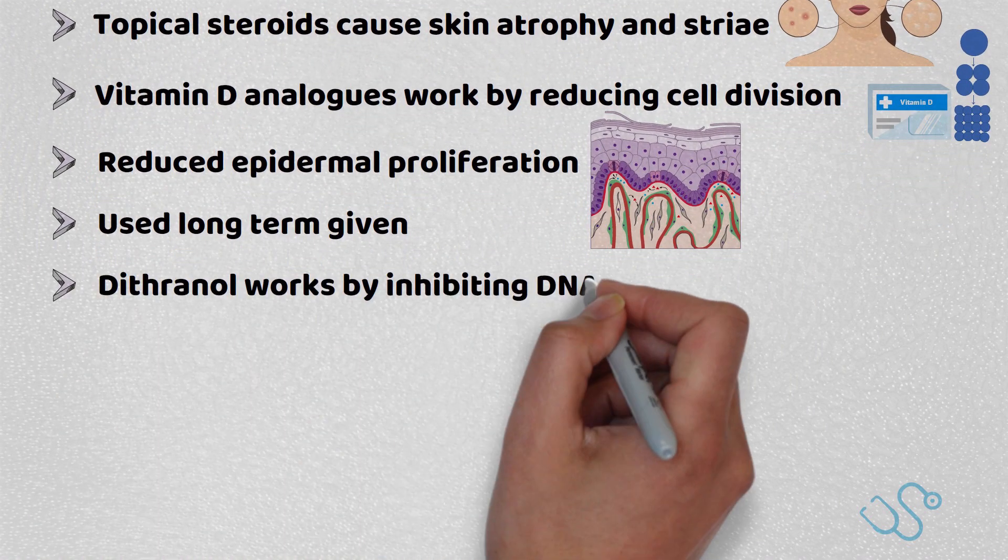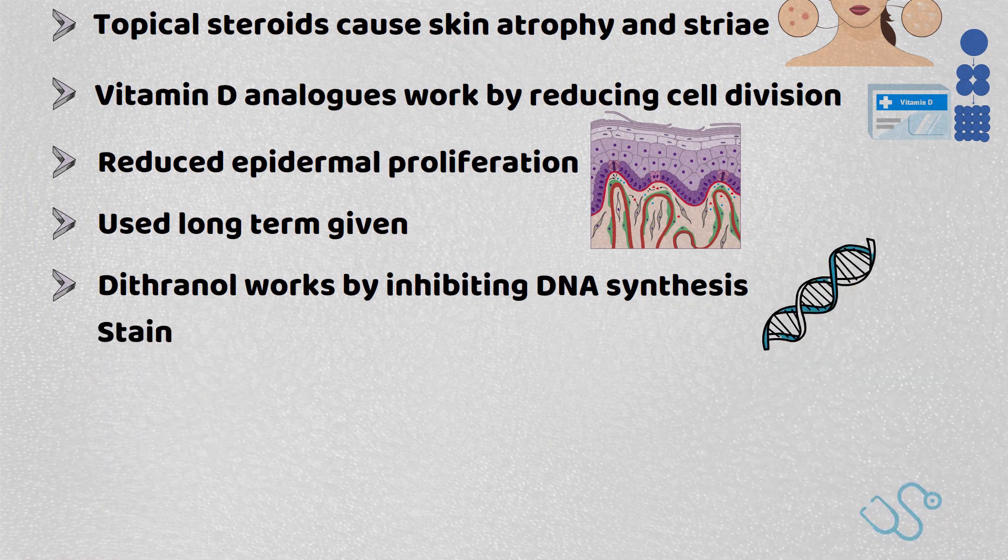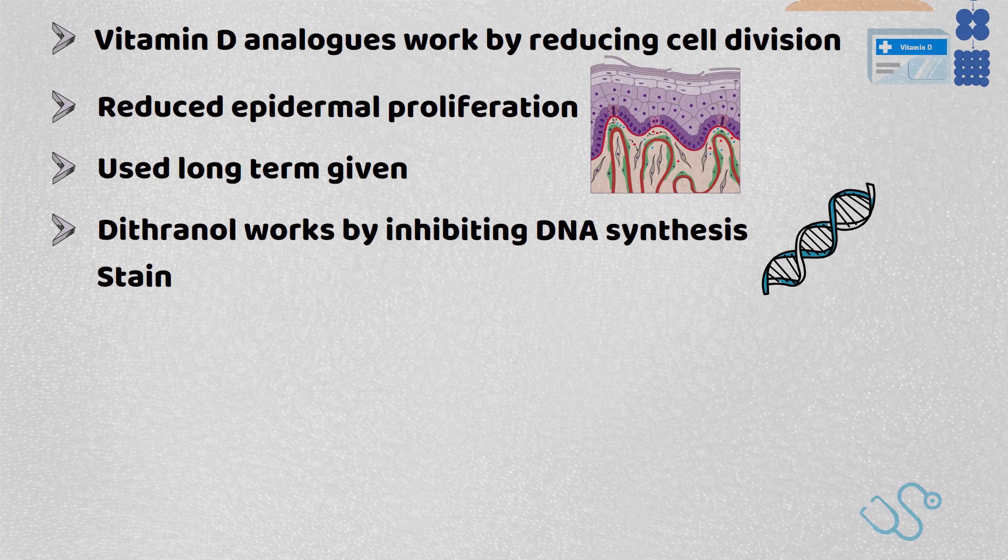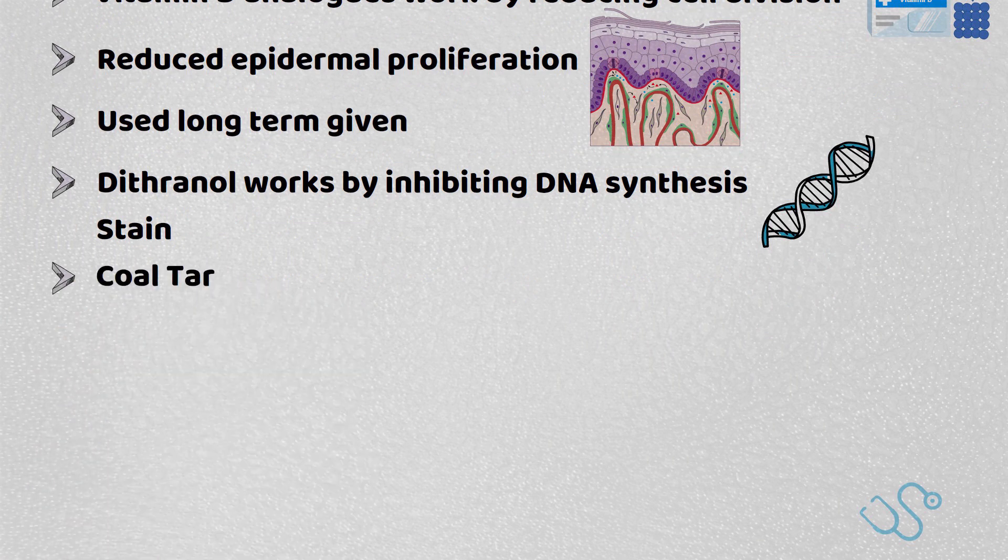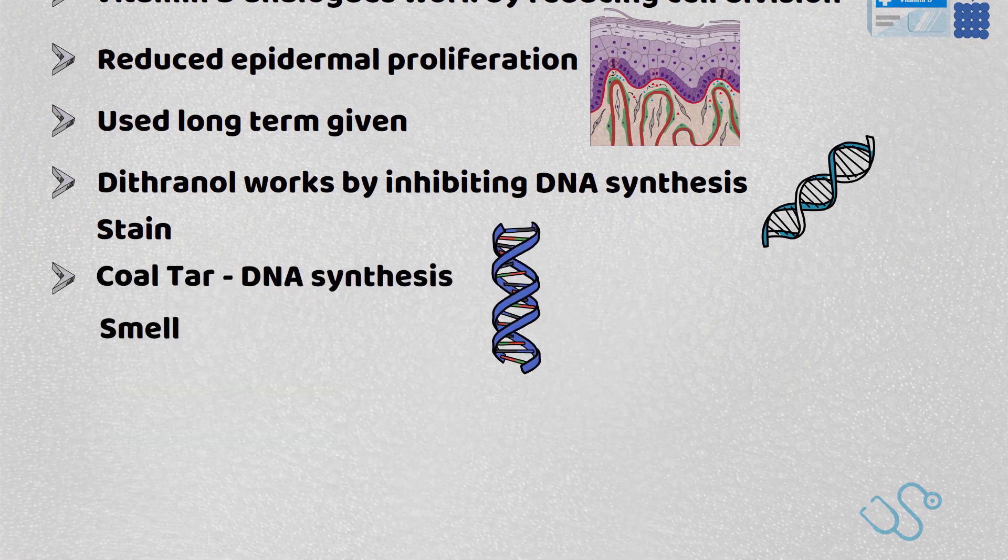Dithranol works by inhibiting DNA synthesis but does stain if it's left on for a long period of time. Whereas coal tar is also thought to be inhibiting DNA synthesis but has a strong smell to it.